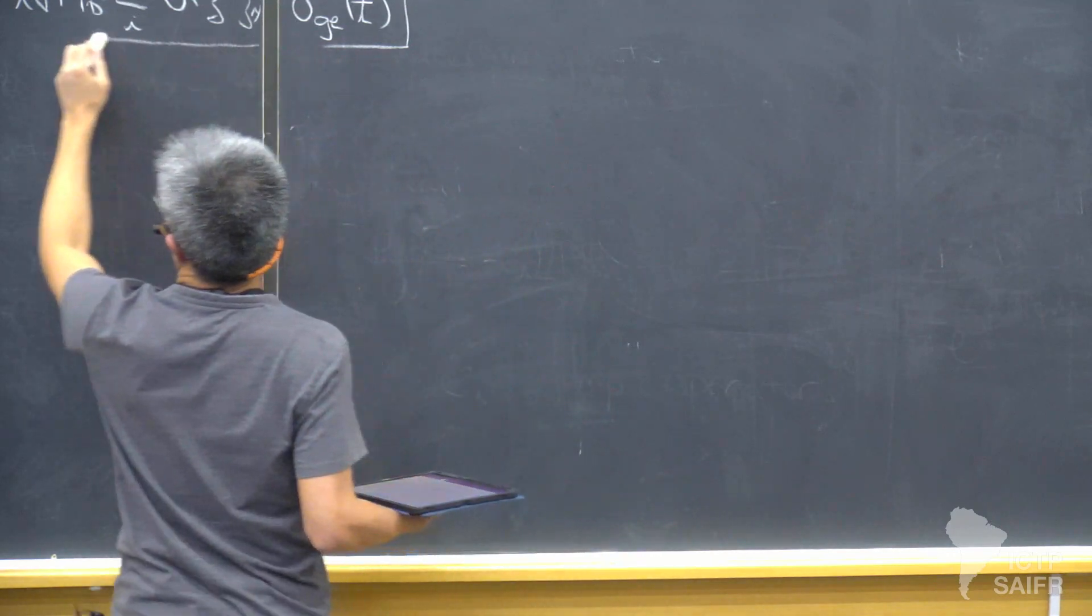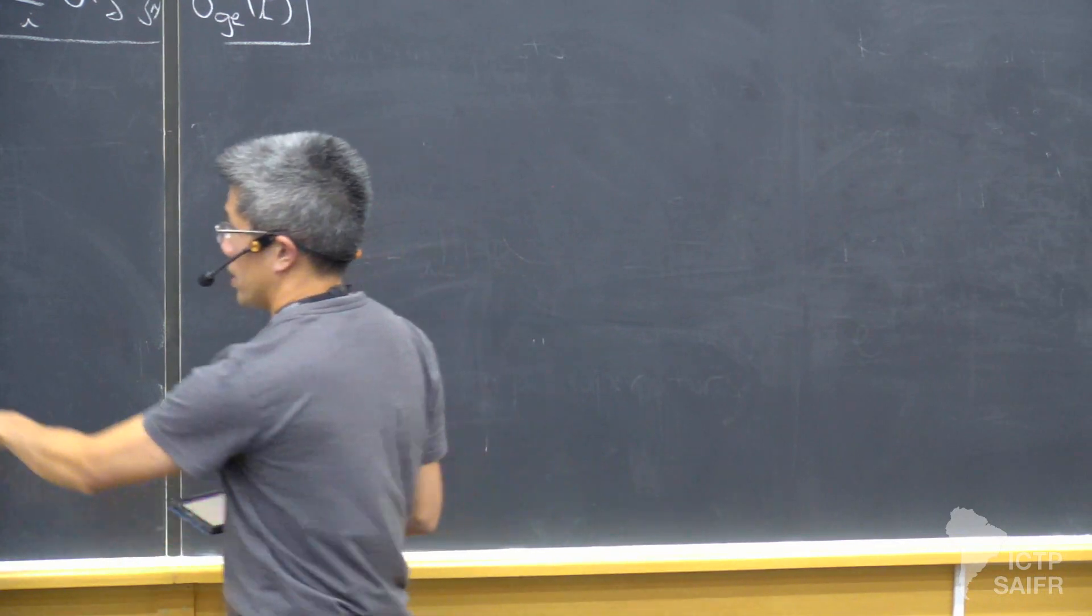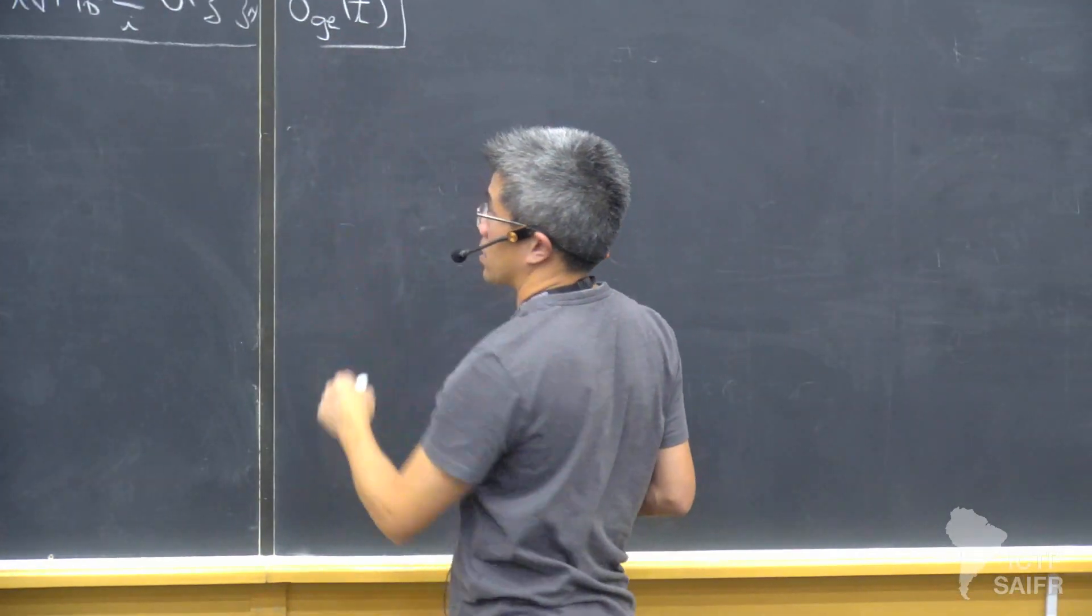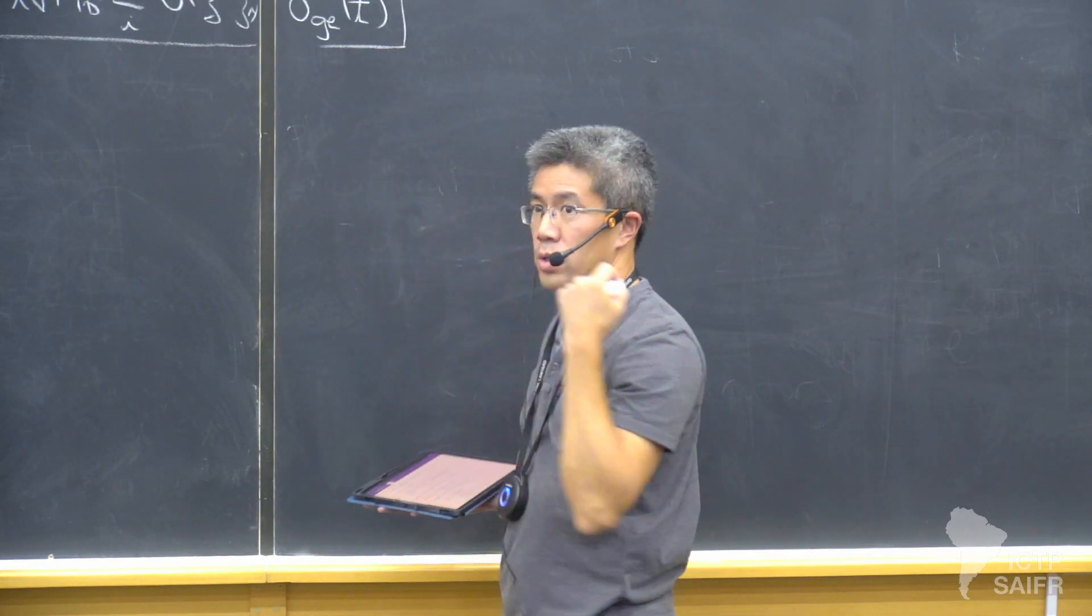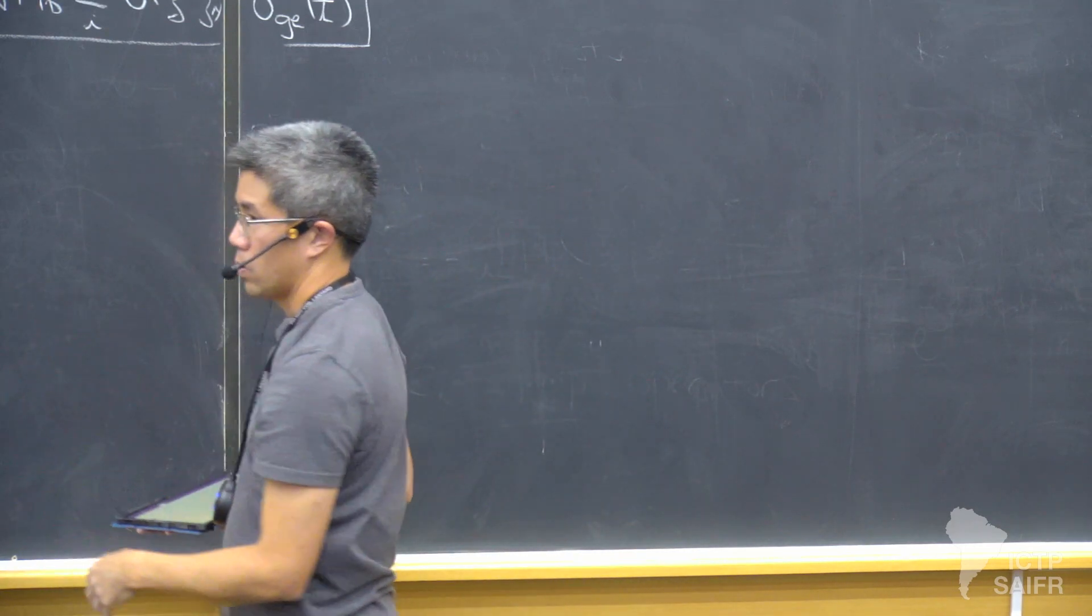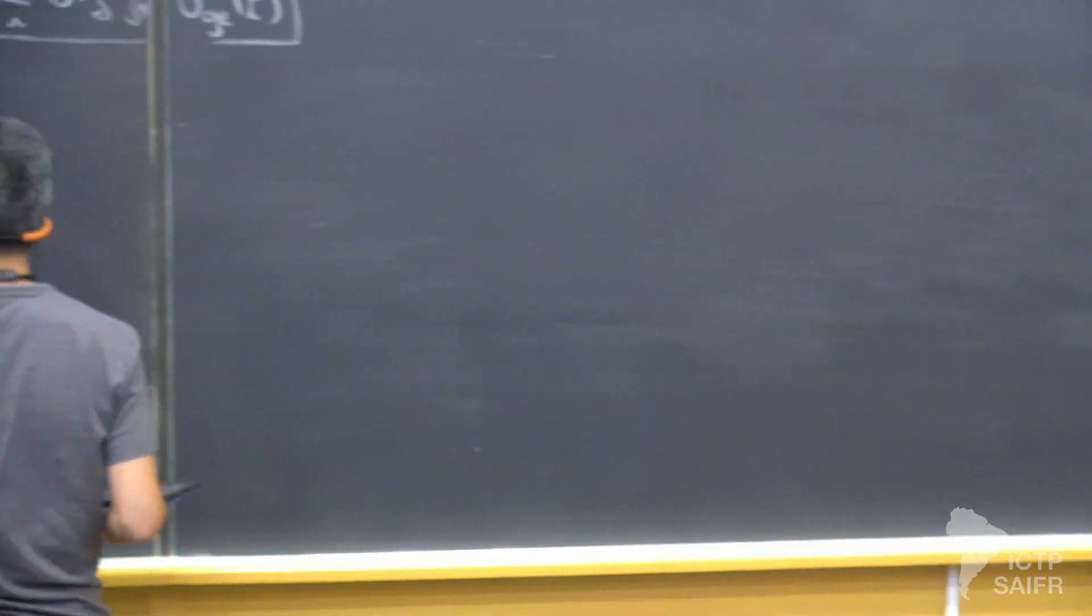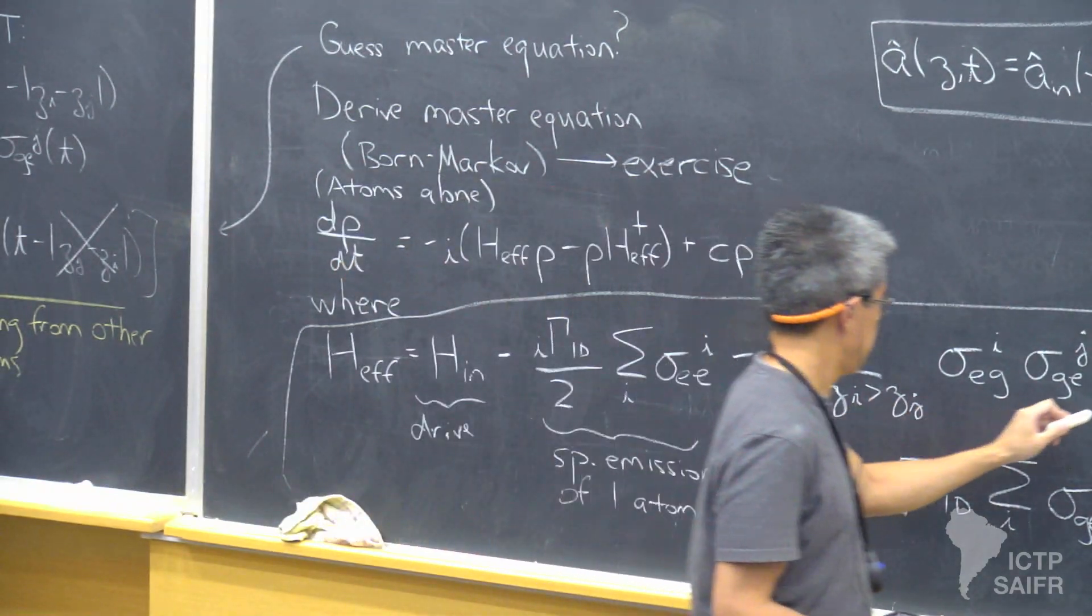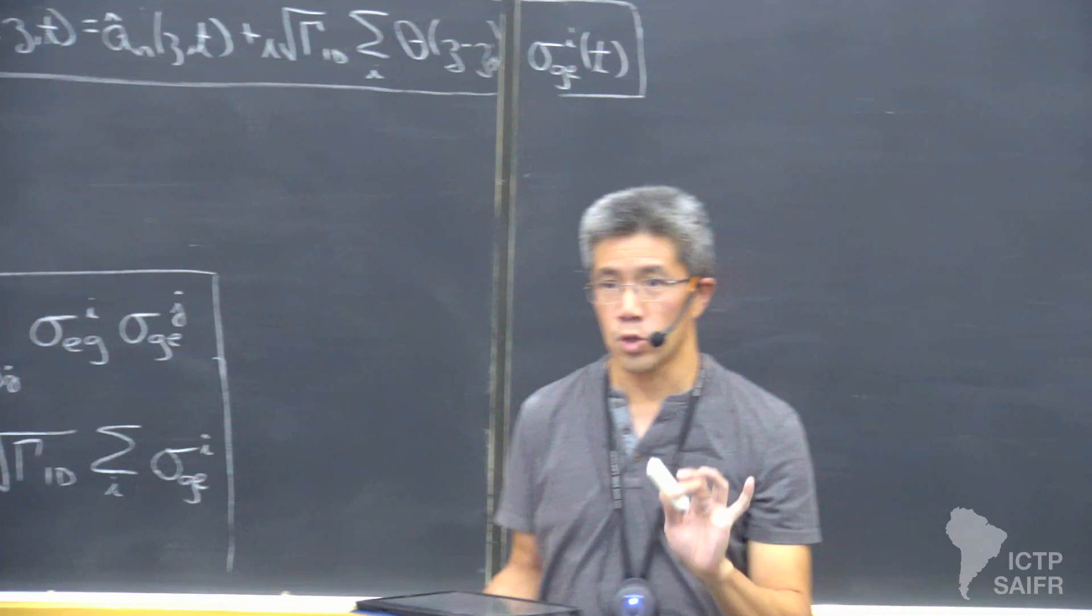And so just as we invoked this Markovian approximation for the atoms, we can invoke it for the field as well. We got rid of the fact that in principle the field at an observation point depends on the atoms at a previous point in time. So self-consistently, we can also ignore that retardation. And so everything I set up to now was just to arrive at these two equations. So let's do a bit of a reset.